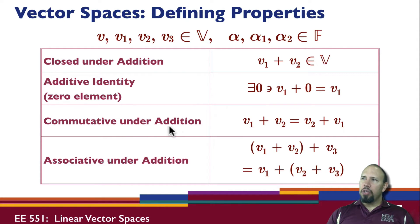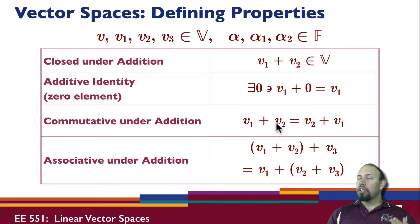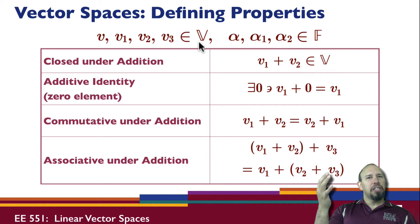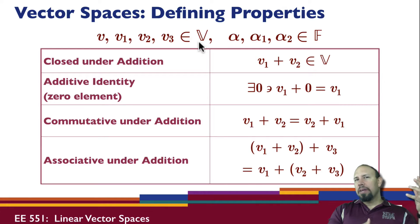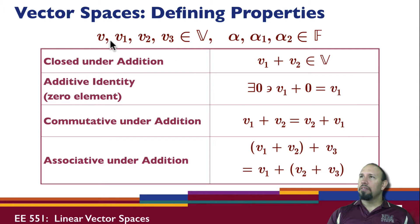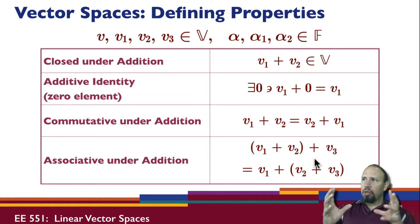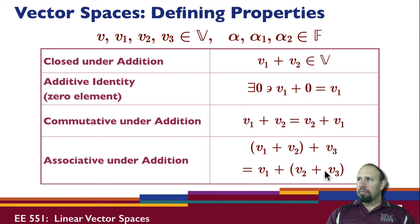The vector space is commutative under addition: it doesn't matter which order you put them in. Notice that a lot of these properties are similar to the kinds of properties you have with the field, but the vector space is more general. You can think of the vector space as being an n-dimensional vector — an n-dimensional vector of reals, complexes, or polynomials. You can go through and show that a lot of different types of math objects can satisfy these properties. Associative under addition: if I add them one way, I get the same thing as if I add them in a different grouping.